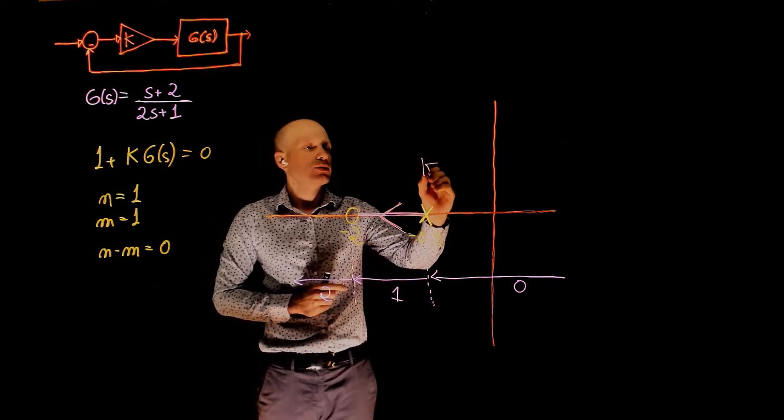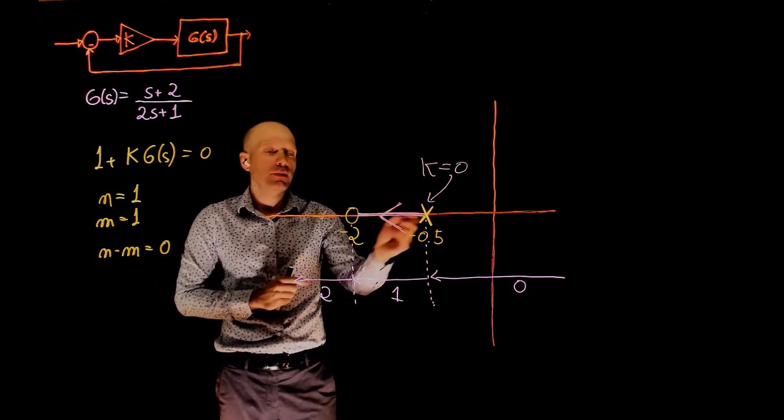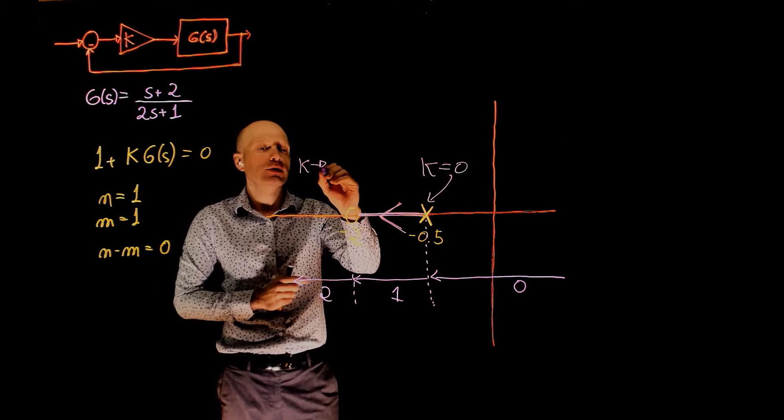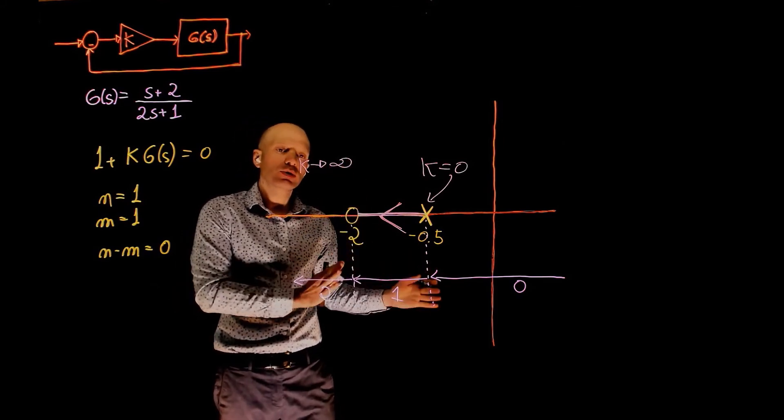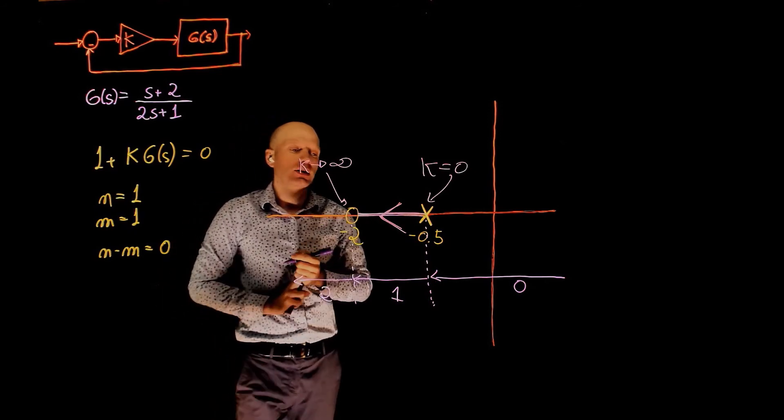When k equals 0, the closed loop transfer function poles are here. And when k tends to infinity, the closed loop transfer function of this feedback system will now migrate to negative 2.